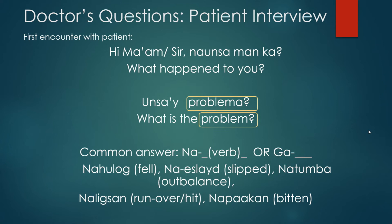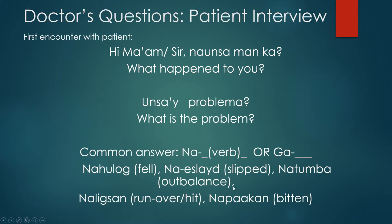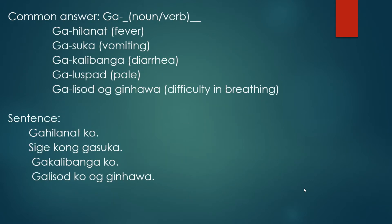So 'unsay' means 'what' and 'problema' means 'problem.' These are the common answers: 'na' plus verb, or 'ga' plus verb, or noun. For example: 'na hulog' means 'fell,' 'na slide' means 'slipped,' 'natungbah' means 'out of balance,' 'naligsaan' means 'run over or hit by a car,' and 'napaan' means 'bitten' — bitten by a cat or dog. 'Erring' is cat and 'ero' is dog. So 'napaan og erring' means bitten by a cat, 'napaan og ero' means bitten by a dog.